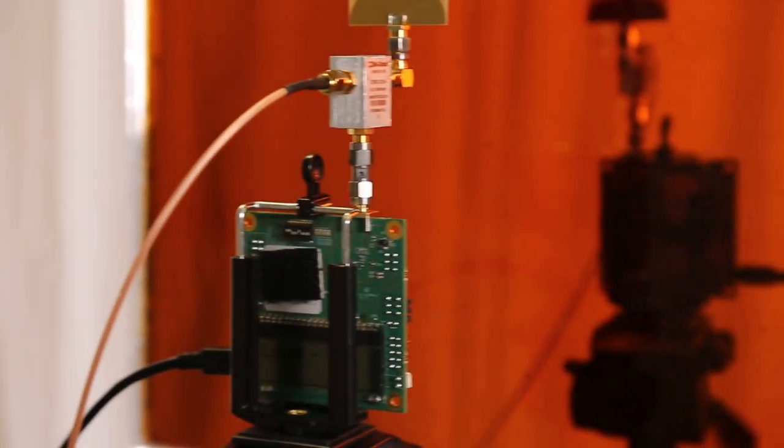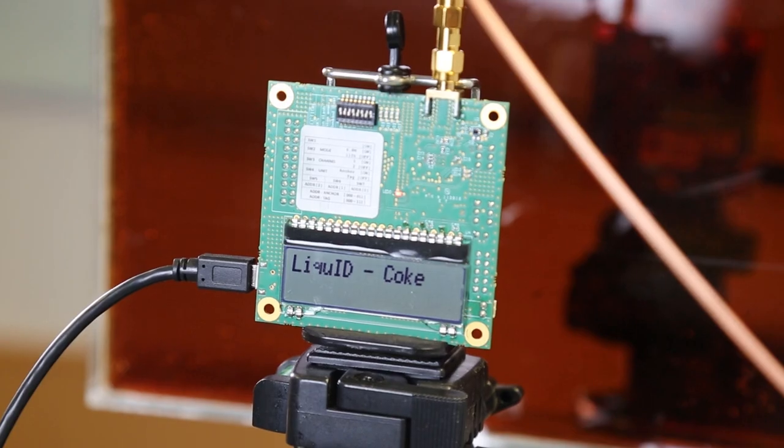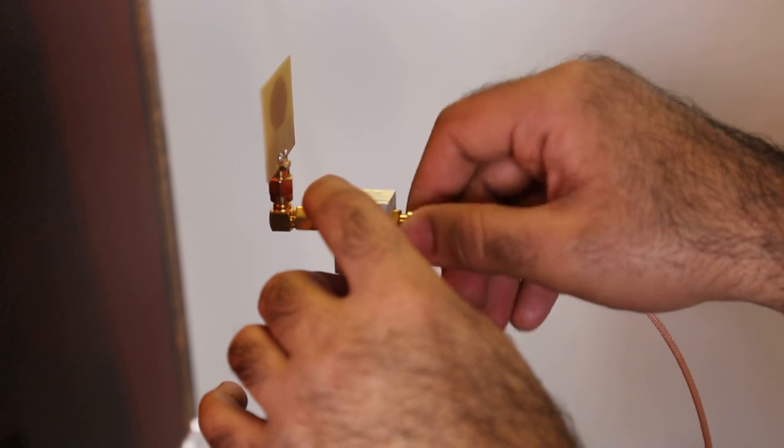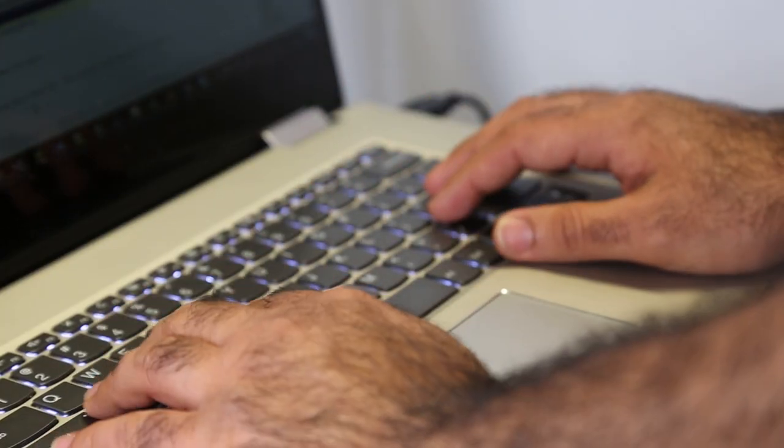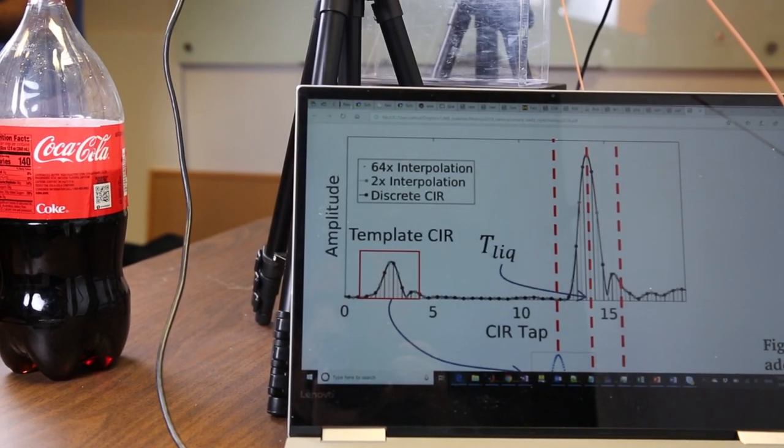It is hard to identify a liquid inside a container without taking out a sample from it. When we pass wireless signals through a material, a liquid in this case, it slows down and if we can measure the slowdown of the wireless signals going through the liquid, we are able to identify it.